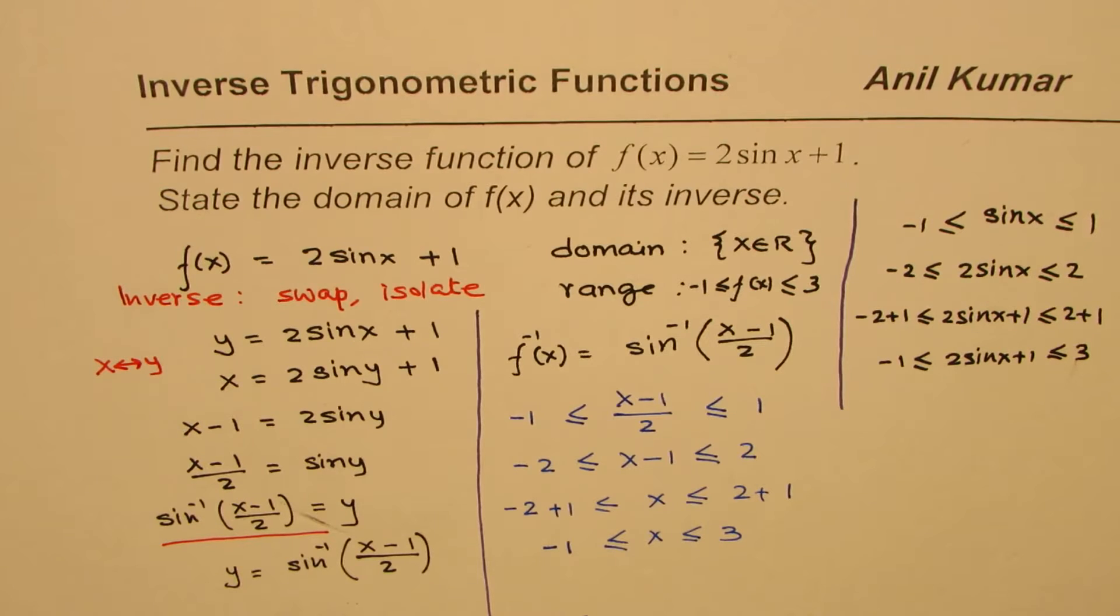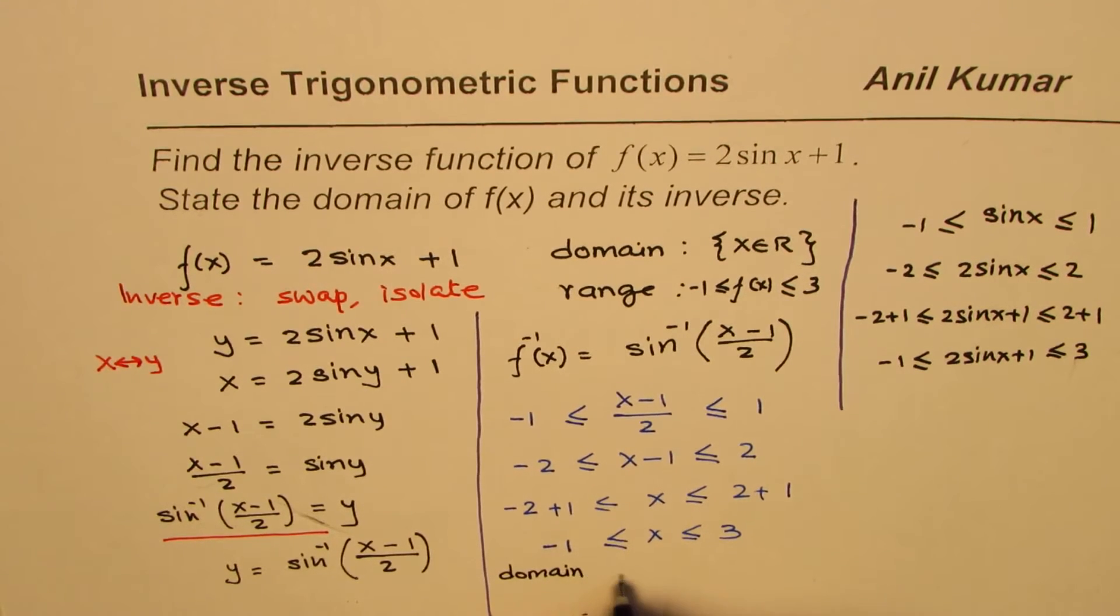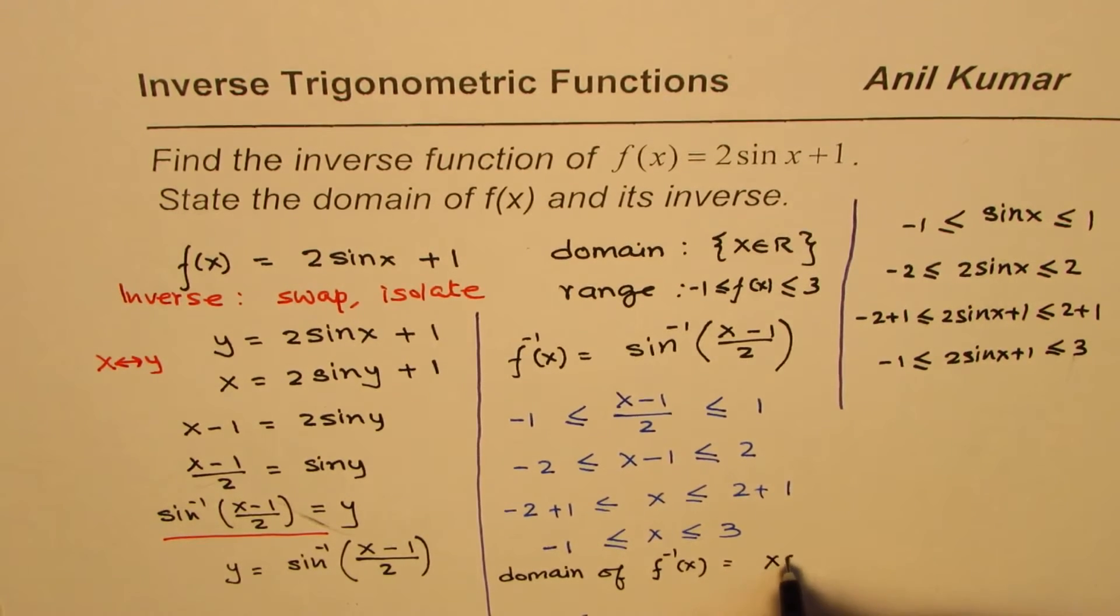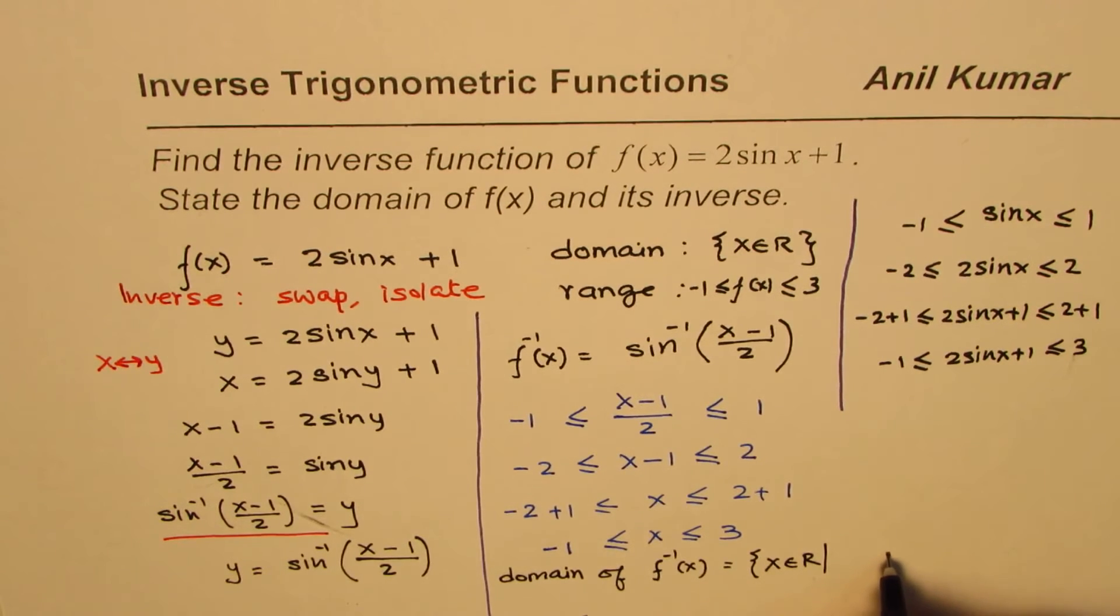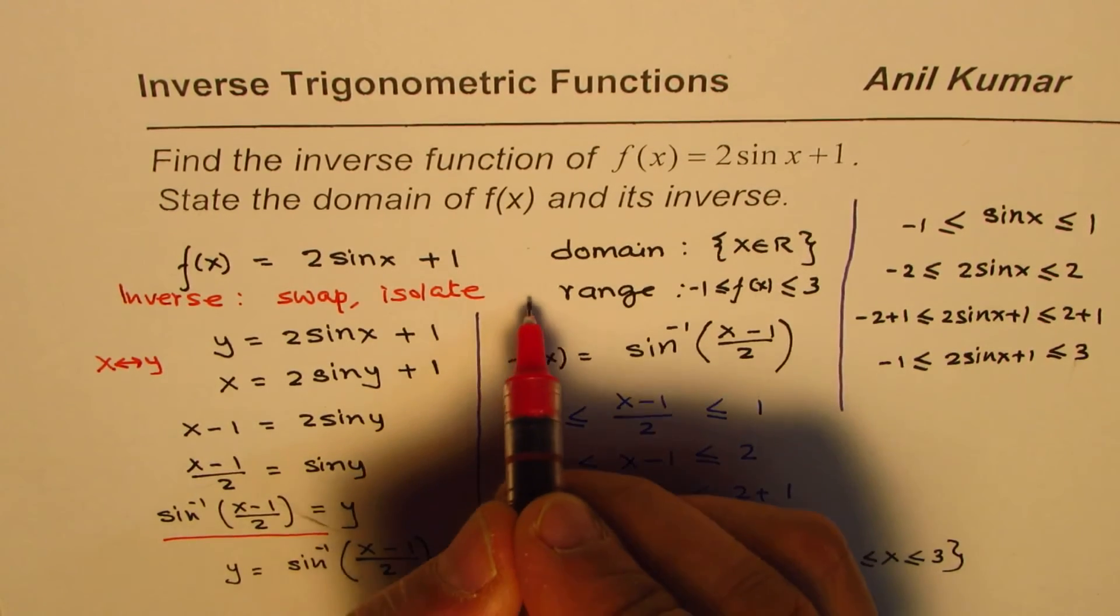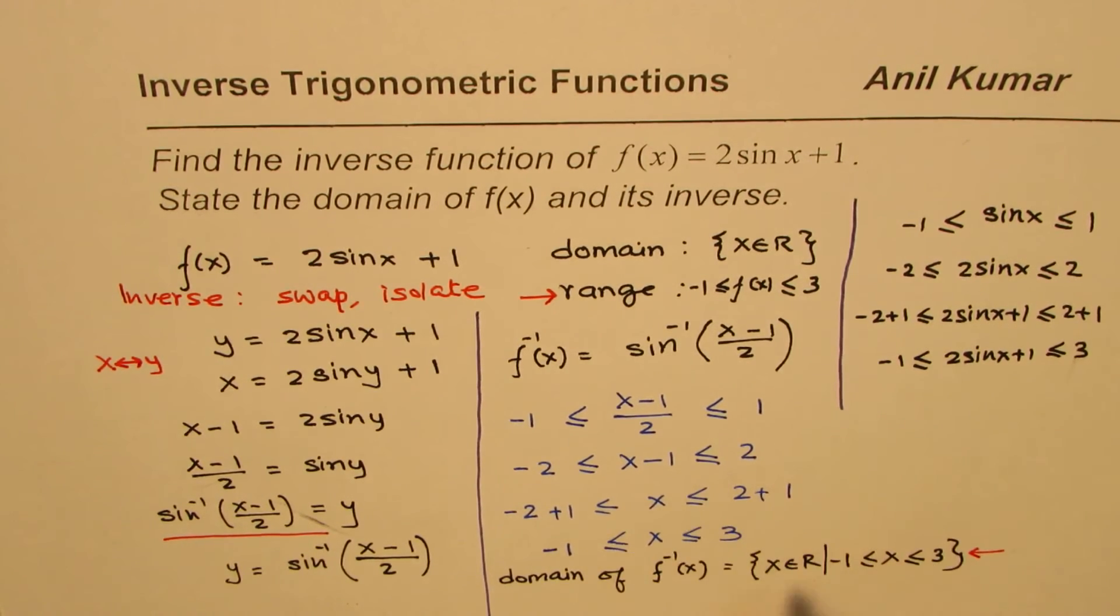So, the inverse has a domain. So, that becomes the domain. So, we can now write domain of f⁻¹(x). Is x belongs to real numbers, where x is between -1 and 3. So, you can see very clearly that as far as the function is concerned, the range becomes domain for the inverse.